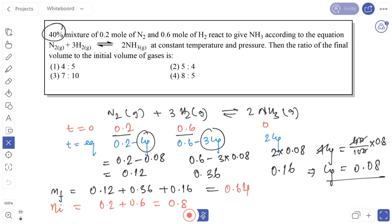Now if we calculate the ratio of final volume to initial volume, that is n_final by n_initial, which means 0.64 by 0.8.